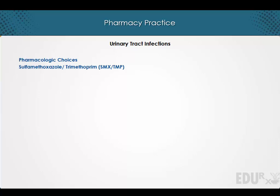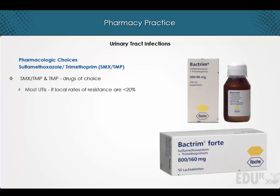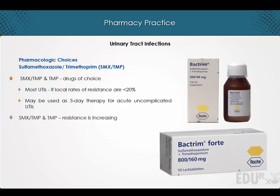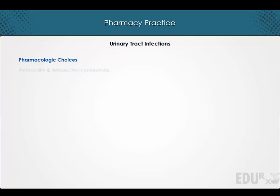Now let's discuss therapeutic choices. Pharmacologic choices: sulfamethoxazole, and trimethoprim-sulfamethoxazole in combination with trimethoprim, and trimethoprim as monotherapy, are the drugs of choice for most urinary tract infections if the local rates of resistance are less than 20%. Both agents may be used as three-day therapy for acute uncomplicated urinary tract infections. Resistance to trimethoprim-sulfamethoxazole and trimethoprim monotherapy is increasing and must be considered in individuals who have either failed empiric therapy or who have had recent prior therapy with these agents.